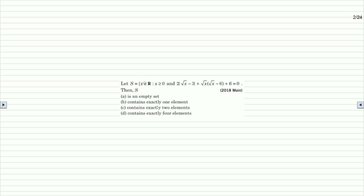Solve the problem: the set S is defined as S = {x ∈ ℝ : x ≥ 0, and 2|√x - 3| + √x(√x - 6) + 6 = 0}. We need to evaluate the set S and select from the corresponding options.